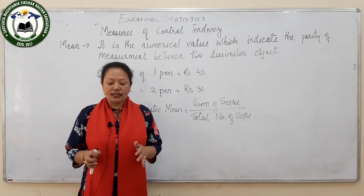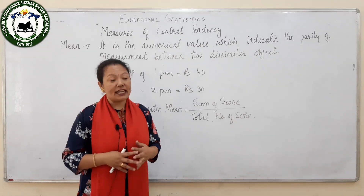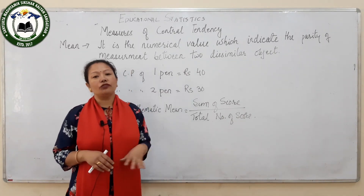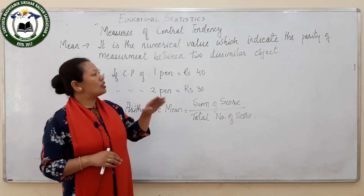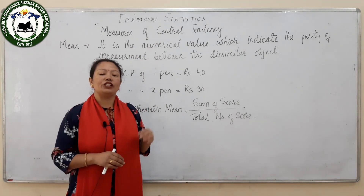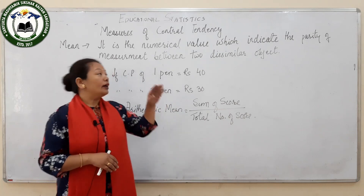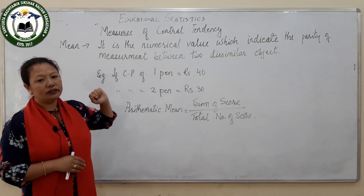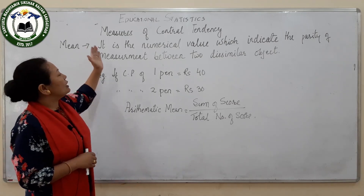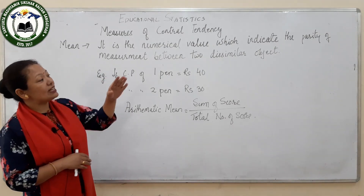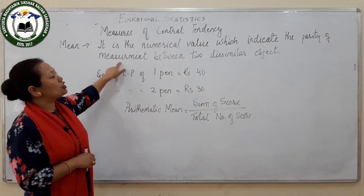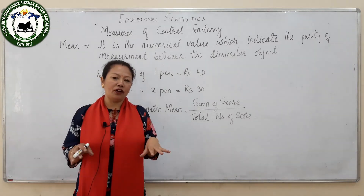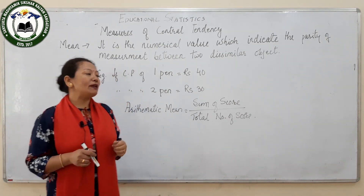All these statistical procedures or techniques for measuring the central tendency — among all of those, the measures of central tendency is the very easiest one. In the measures of central tendency, first we need to deal with mean. Mean is a numerical value which indicates the parity of measurement — parity means the equality of measurement between two dissimilar objects.